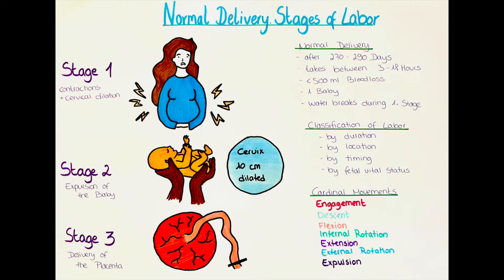The first stage of labor is the stage of cervical dilation. The second stage of labor is the stage of fetal expulsion — when the baby is actually born. The third stage of labor is the stage of the delivery of the placenta, also called afterbirth. In some textbooks, the fourth stage is the stage of hemostatic stabilization and recovery of the mother.